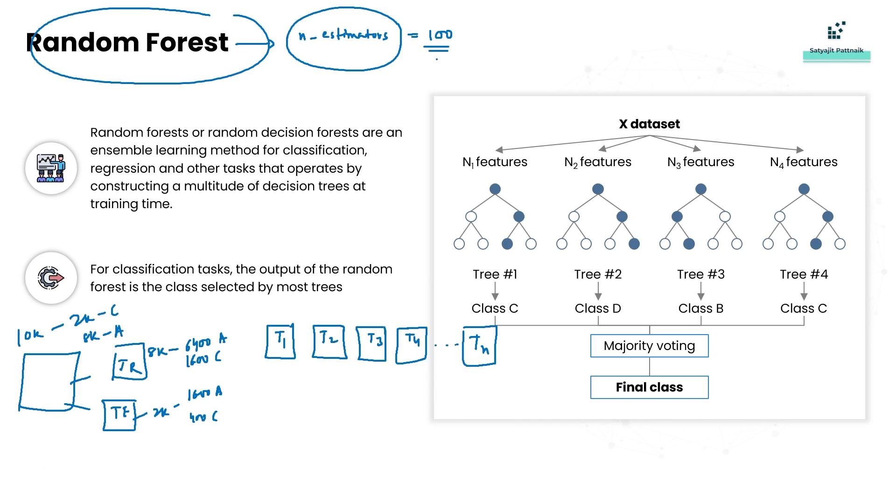Once we jump into the practicals I will explain you this thing again. By default the n_estimators are 100, which means by default if you create a random forest, 100 decision trees will be internally created. That is understood - that is the forest part. Forest is combination of trees.